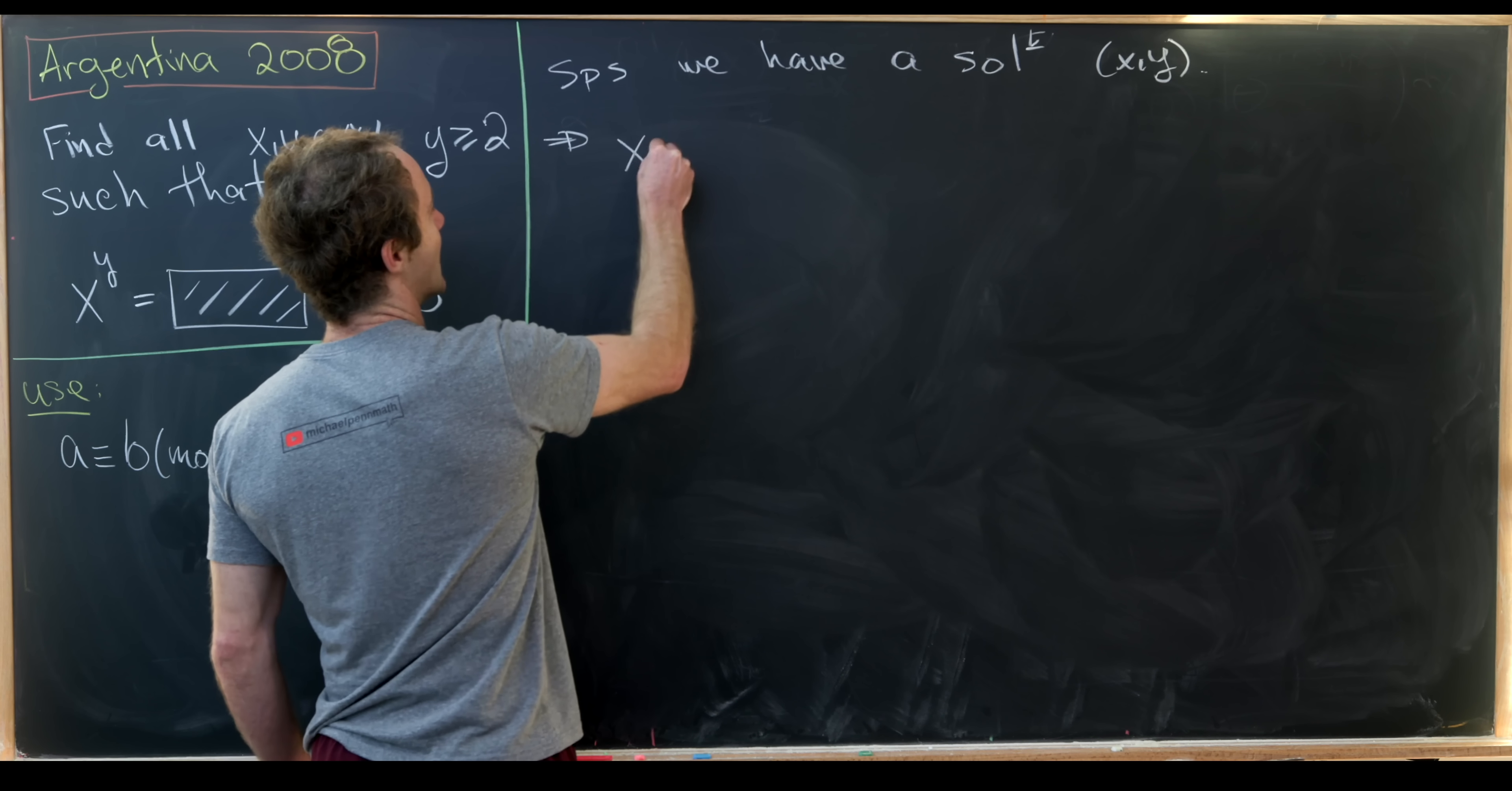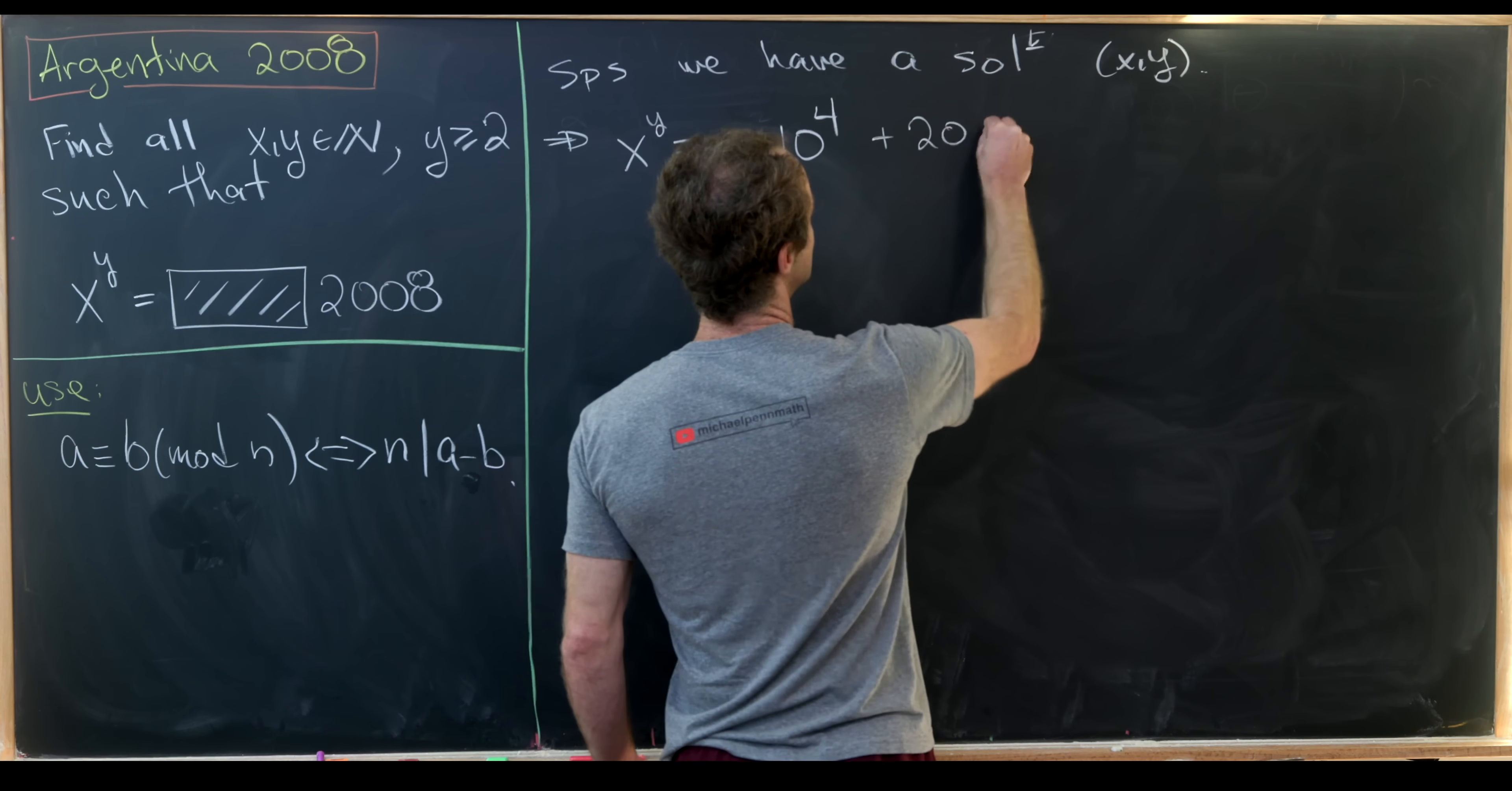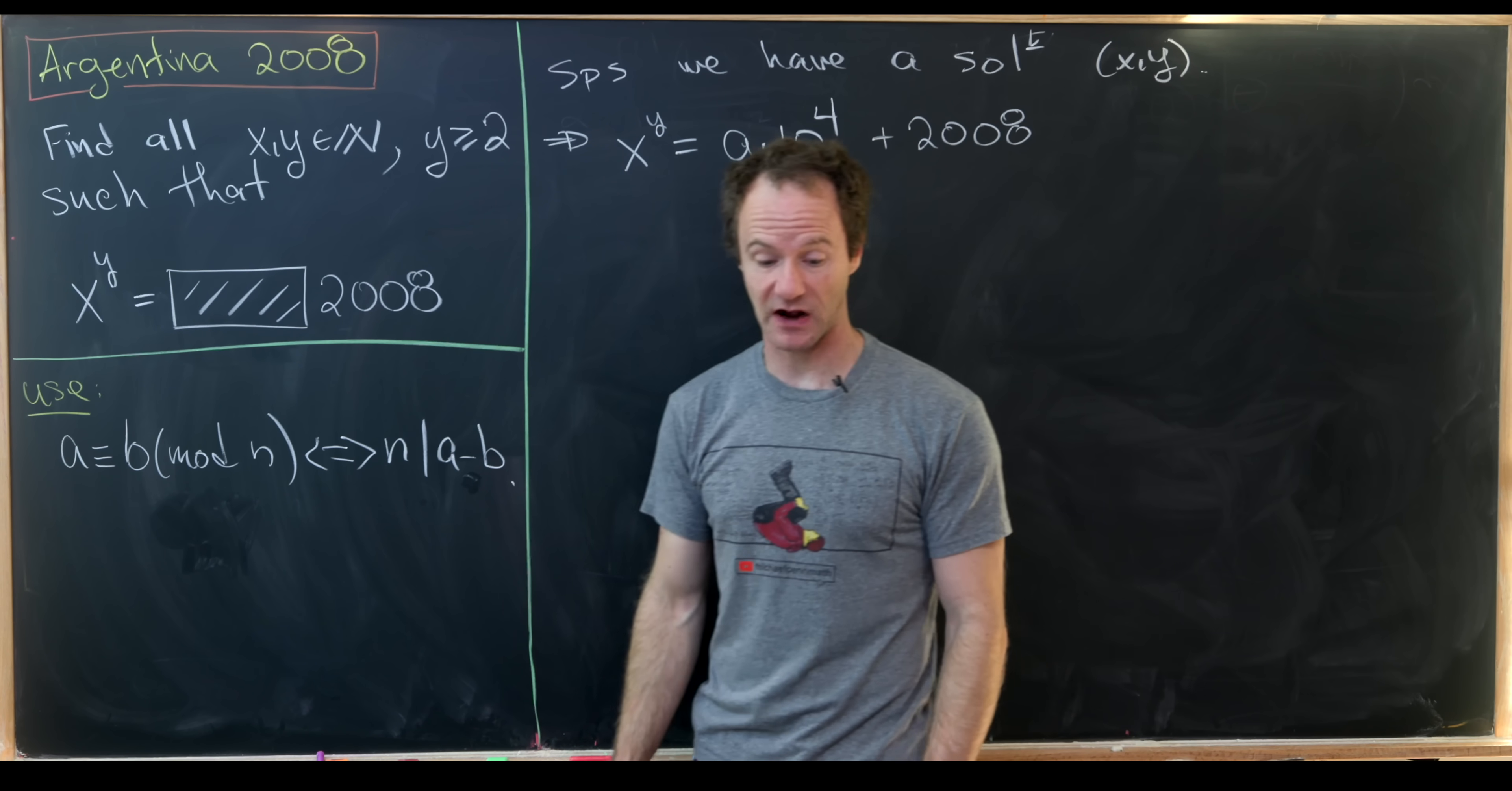That means we know x to the y power is equal to some number which I'll call a times 10 to the 4 plus 2008. This some number times 10 to the 4 is just encoding all of these digits that are over on the left hand side of our number.